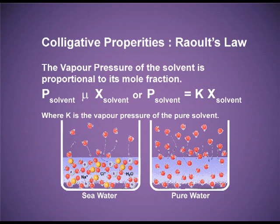In figure B, we have pure water. There is no salt. So on the surface, totally we have the water molecules and they are getting greater chance to escape and to convert into water vapour. Now you can compare the two figures and understand that there will be a lowering in the vapour pressure when a non-volatile solute is mixed.